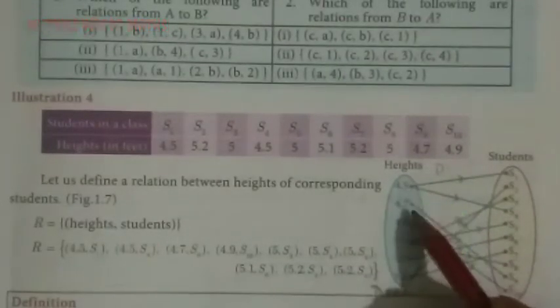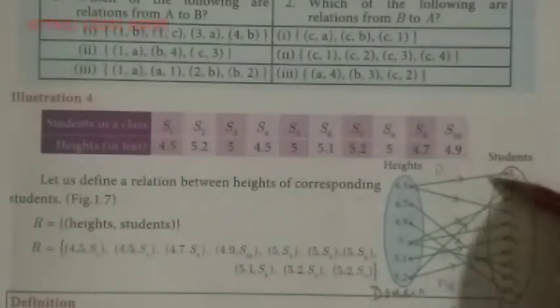First 4.5, 4.7, 4.9, like that - some height values. So students are here. There are students in this order. So we can write 4.5. Student S1 is 4.5 height.